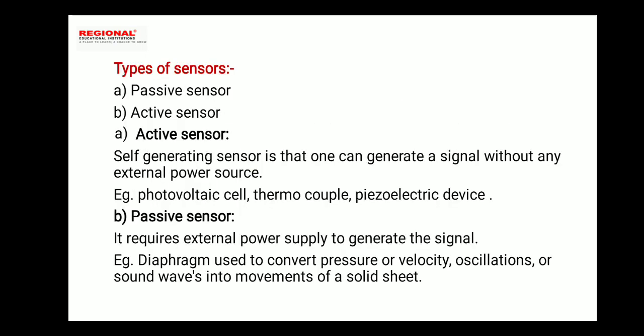There are types of sensors: passive sensors and active sensors. An active sensor is a self-generating sensor — it can generate a signal without any external source. For example, photovoltaics detect light and produce an analog electrical signal. A thermocouple detects temperature and produces an electrical signal.